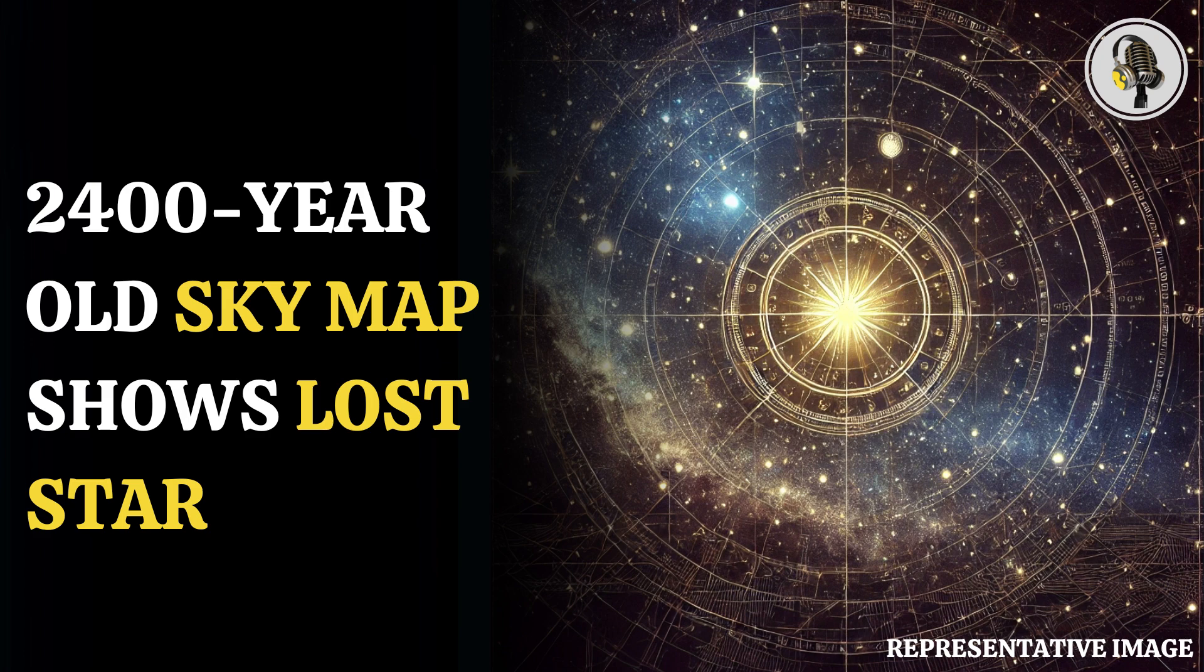The researchers said the map was very complete with all bright stars represented, including the constellations Orion, Scorpius, and the Pleiades.